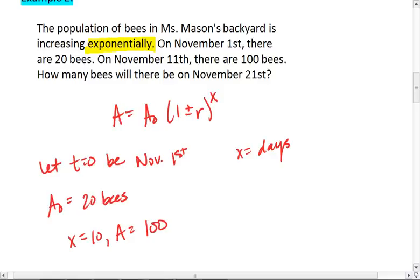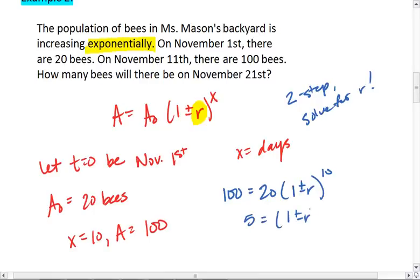So what we want to do is plug these values in to solve for R first. This is a two-step problem because we need to solve for R. We get 100 equals 20 times 1 plus R to the 10th. 5 equals 1 plus R to the 10th. 1 plus R equals... And for right now, we're just going to write plus R because that really does work. As long as we remember that if we end up with a negative value, that means we're decreasing. So 1 plus R equals 5 to the 1/10th.